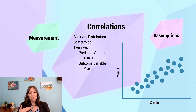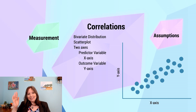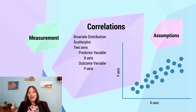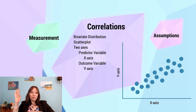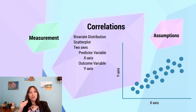In a correlation, when we're looking at the x-axis and y-axis, they mean different things. For a histogram or a frequency distribution, the y-axis meant frequency. It no longer means frequency in a correlation. In a correlation, the x-axis refers to our predictor variable, and the y-axis or the vertical axis refers to our outcome variable, showing the relation between two variables.